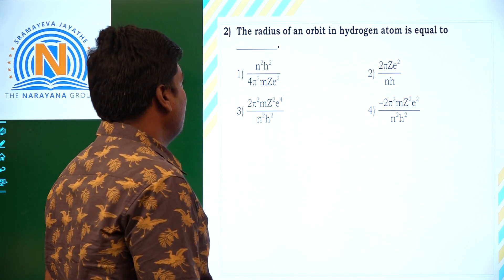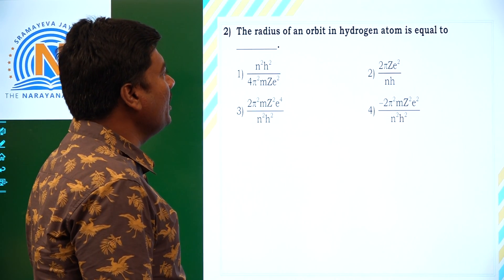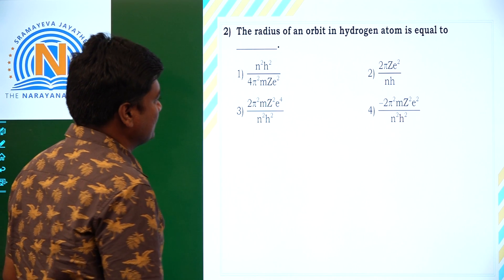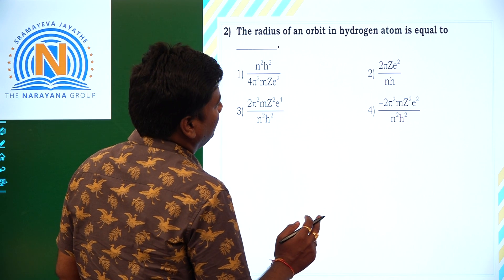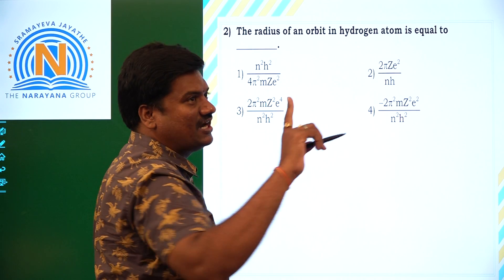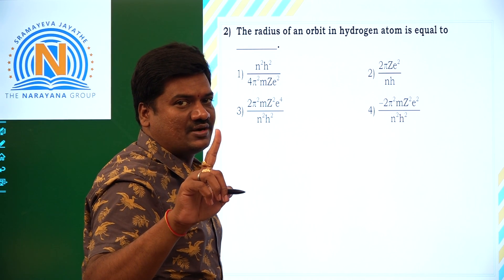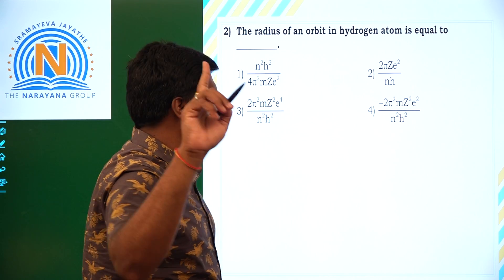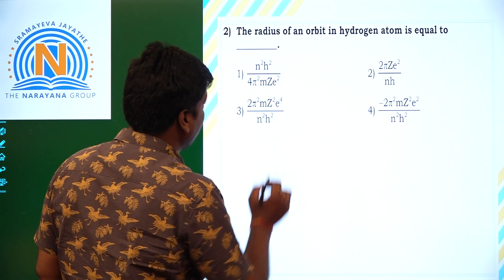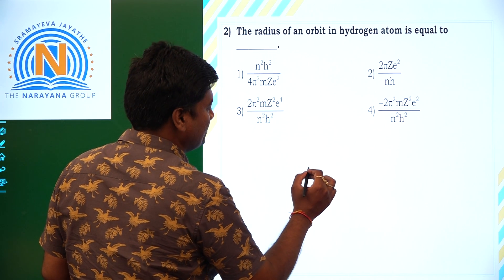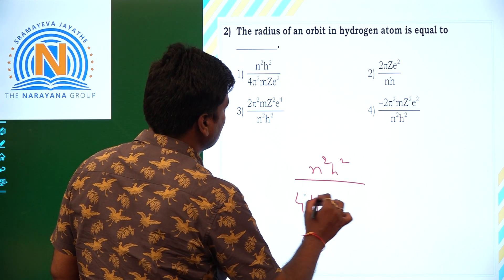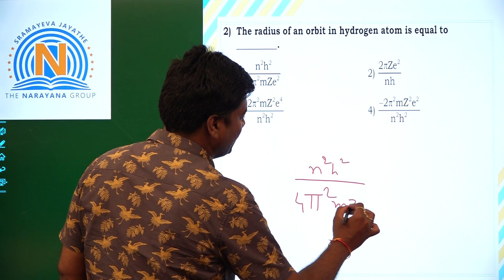Now the second question: the radius of an orbit in hydrogen atom is equal to? Just now we discussed this. For the radius of an orbit in hydrogen atom, we have to use the formula: n square h square by 4 pi square m z e square.